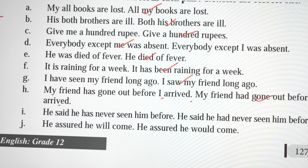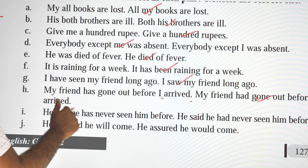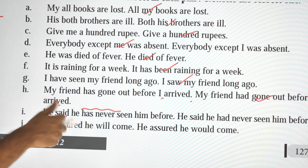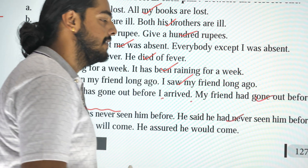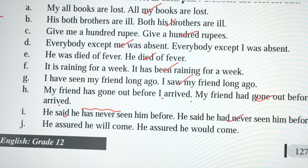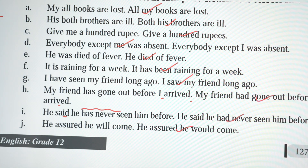He said he has never seen him before, or he said he had never seen him before? He said he had never seen him before. He assured he will come, or he assured he would come? He assured he would come.